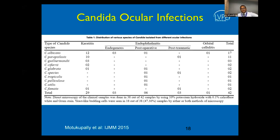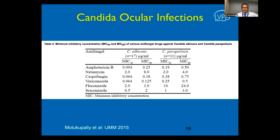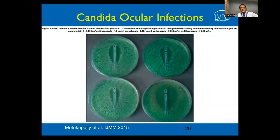In addition to hyaline fungus, Candida or yeasts are also important etiologic agents in fungal keratitis. Candida albicans and Candida parapsilosis are two species that commonly infect the cornea. These agents are usually responsive to amphotericin B, caspofungin, or voriconazole, as noted in their MIC50 and MIC90 values. On an E-test with Müller-Hinton agar with glucose and methylene blue, the minimum inhibitory concentration shows significant zones of inhibition.